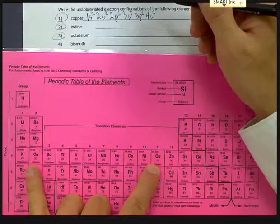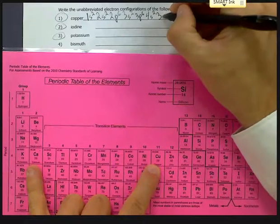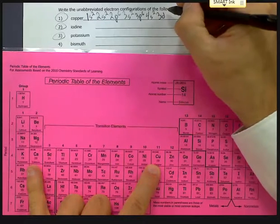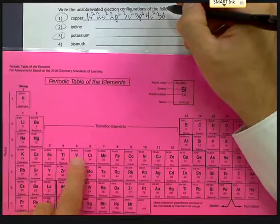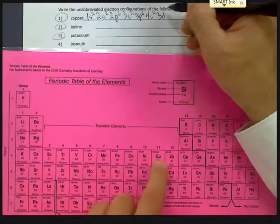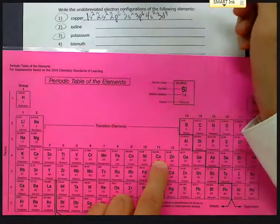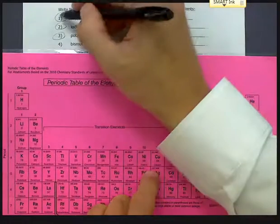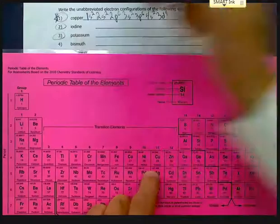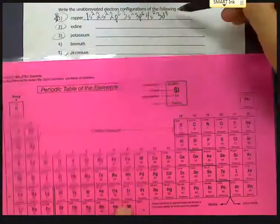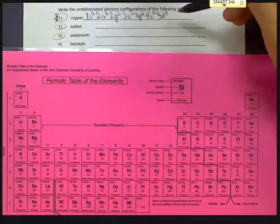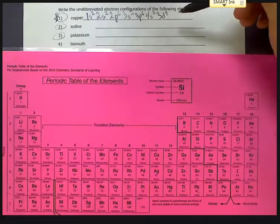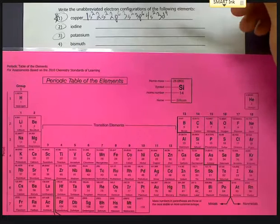The d block is one energy level behind. So if we got here from 4s, we need to be at 3d. Copper is nine into the d block. Now I'm going to put a star next to this one, because while this is technically correct, it isn't the way that copper actually exists in real life. That's something we're going to talk about in class in a little bit. It's one of the exceptions we'll see.